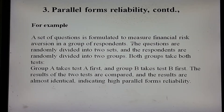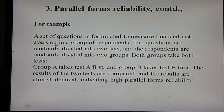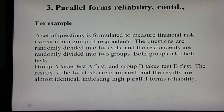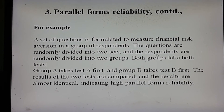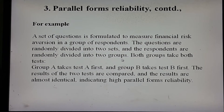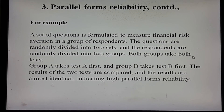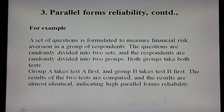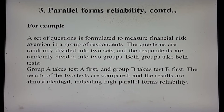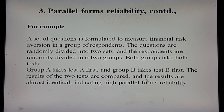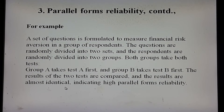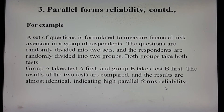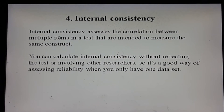High correlation between the two sets indicates high parallel forms reliability. For example, a set of questions is formulated to measure financial risk aversion in a group of respondents. The questions are randomly divided into two sets and the respondents are randomly divided into two groups. Both groups take both sets — Group A takes Test A first and Group B takes Test B first. The results of the two tests are compared and are almost identical, indicating high parallel forms reliability.